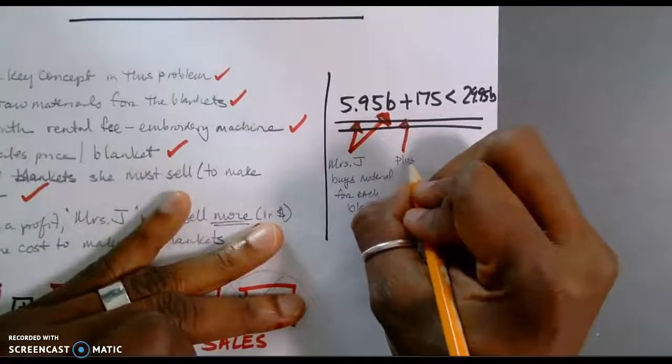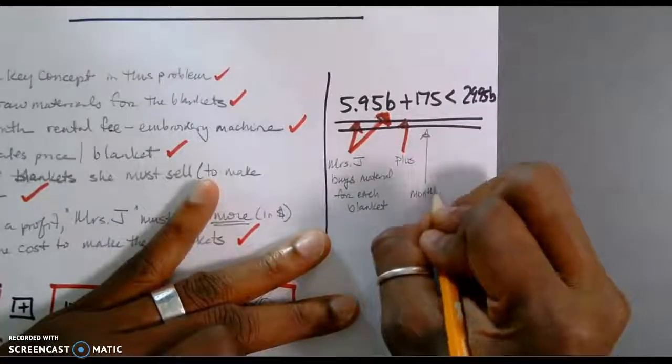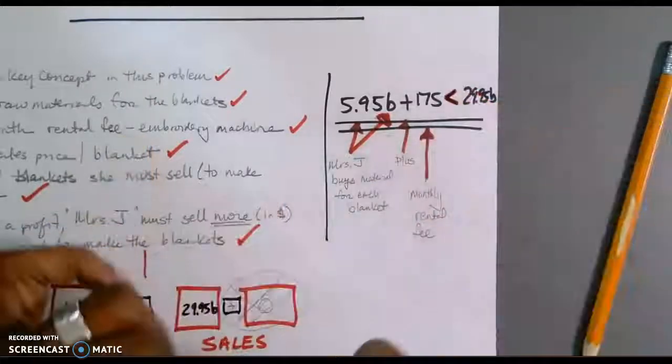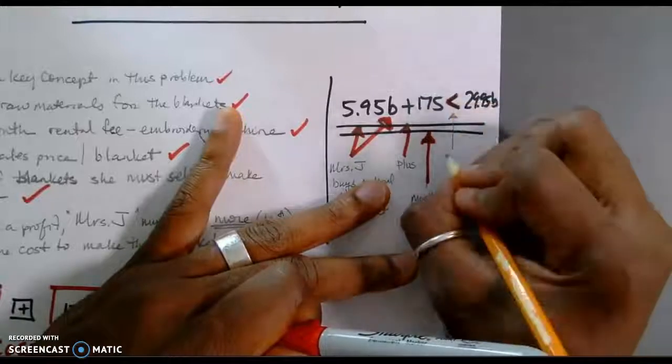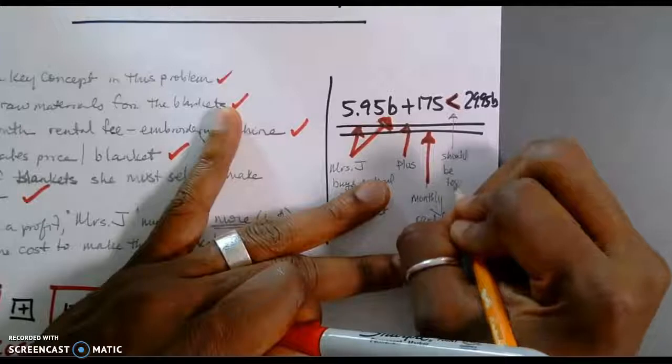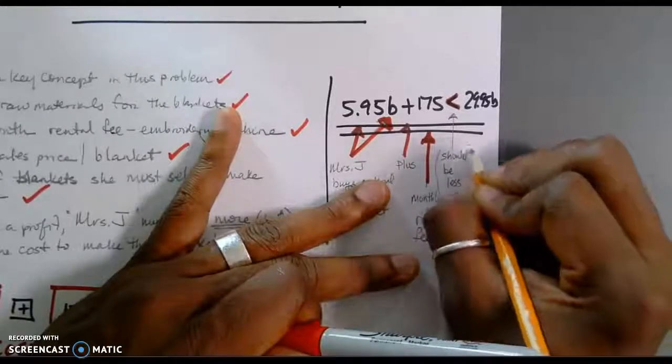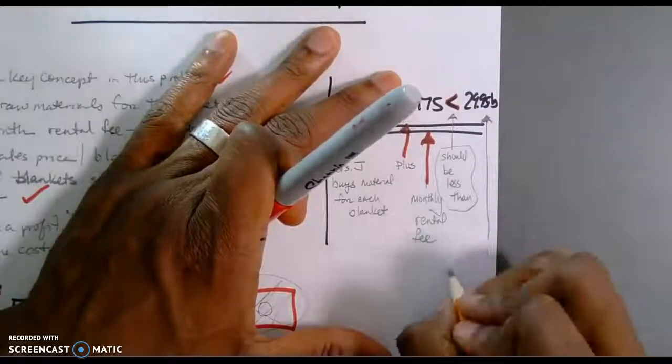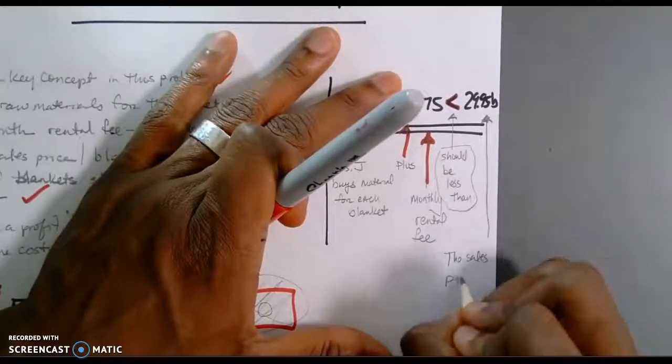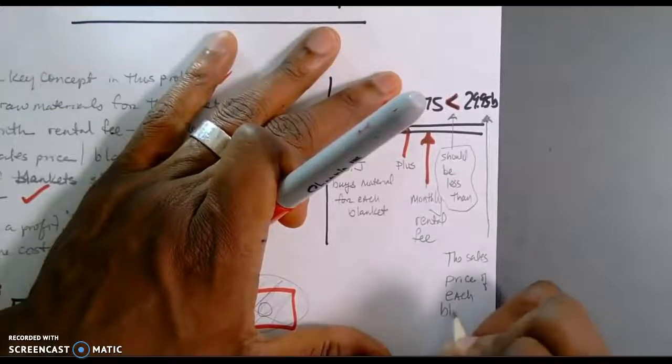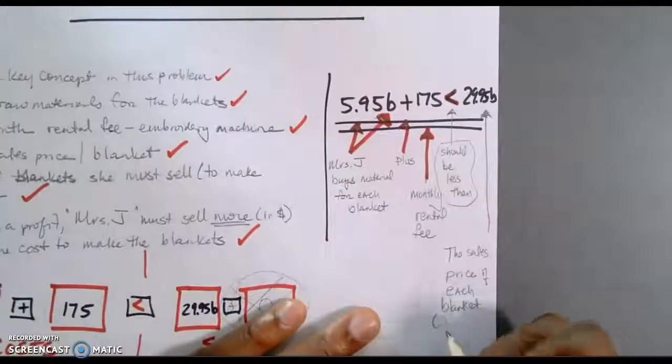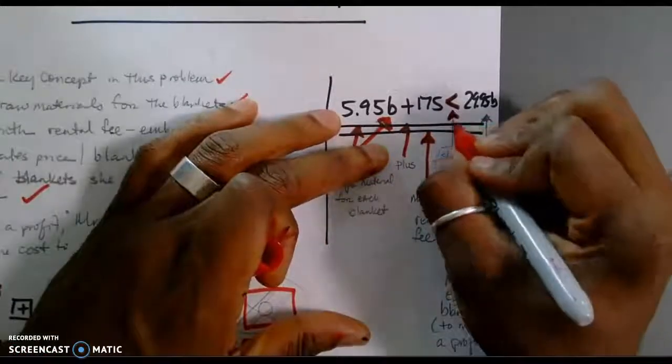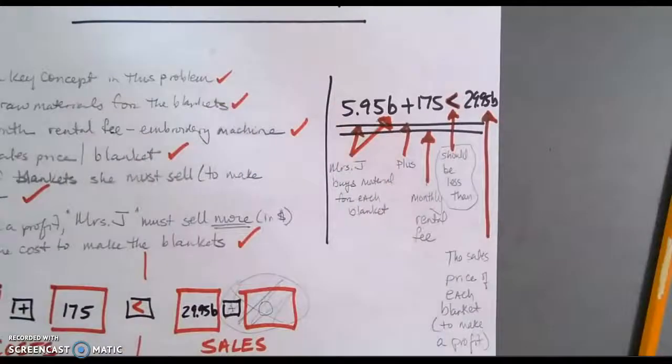Plus her monthly rental fee must be or should be, in order to make a profit, should be less than her, the sales price of each blanket. And in parentheses, I'm going to write here, to make a profit. In this case, one more time, I'm going to make sure that it flows to make sure that we have this written properly.